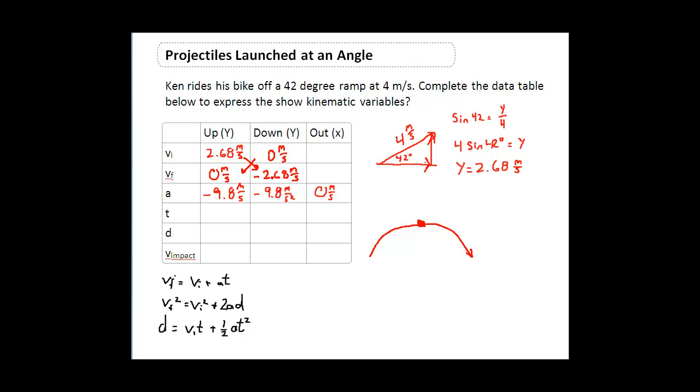We now need to resolve our x component. How fast is our biker riding horizontally? In order to find out how fast he's traveling horizontally, we're going to use cosine of 42 degrees is going to be equal to my x component divided by the hypotenuse or the resultant, which is 4. We need to solve for x, so we're going to rearrange your formula to make it 4 times cosine of 42 degrees. And the x component is going to be equal to 2.97 meters per second.